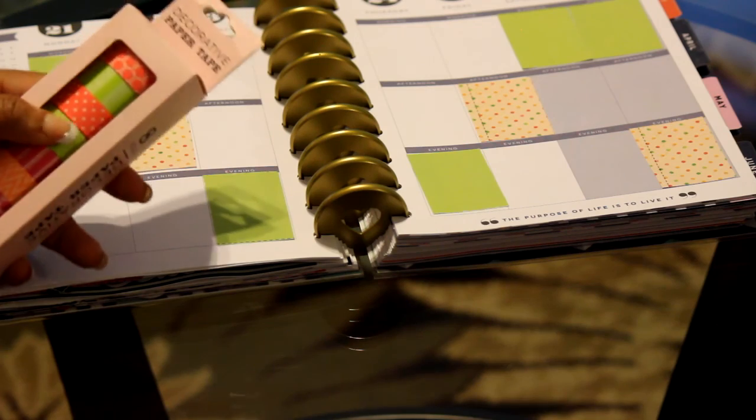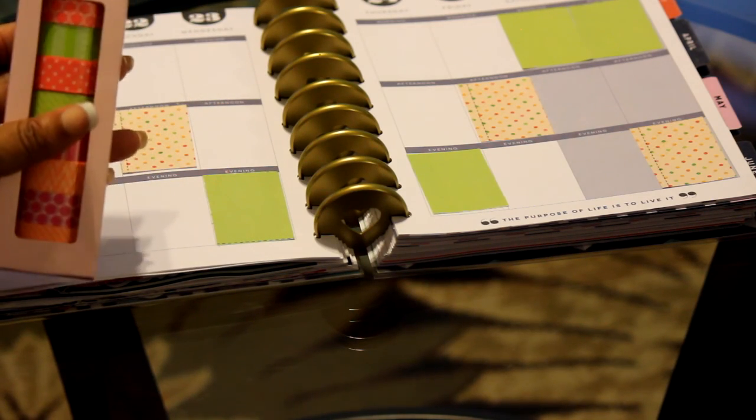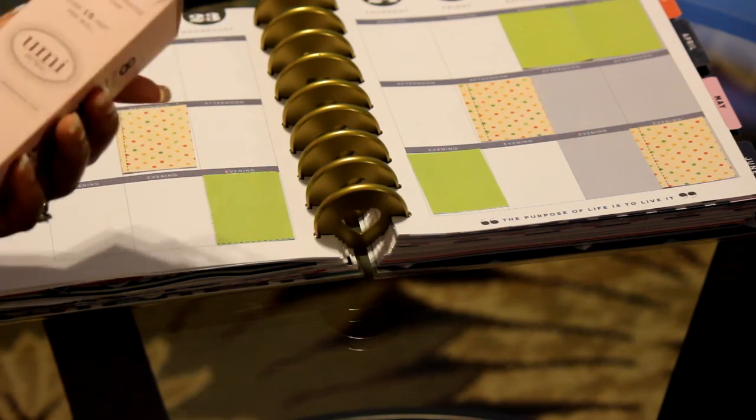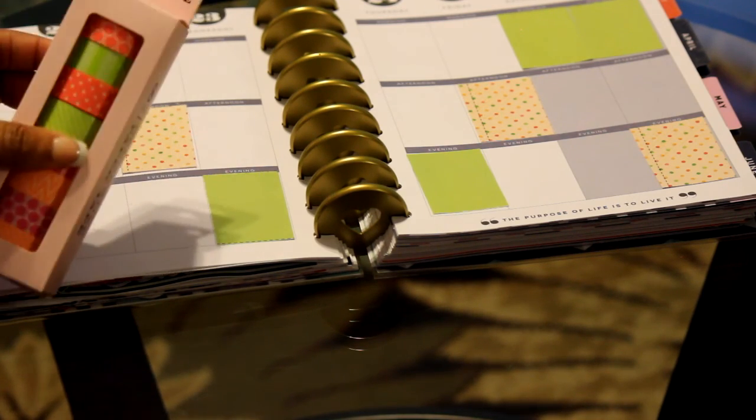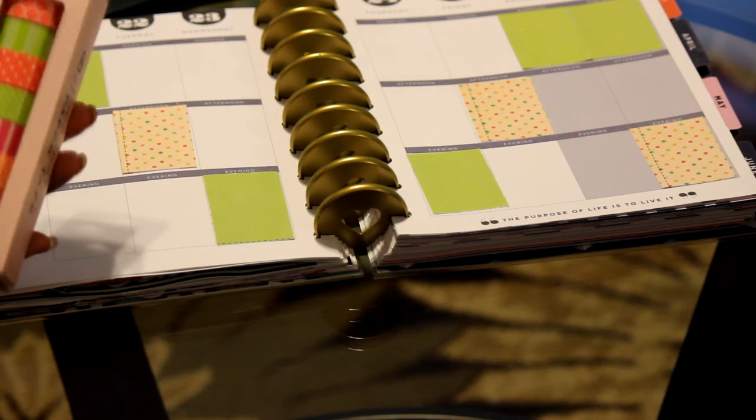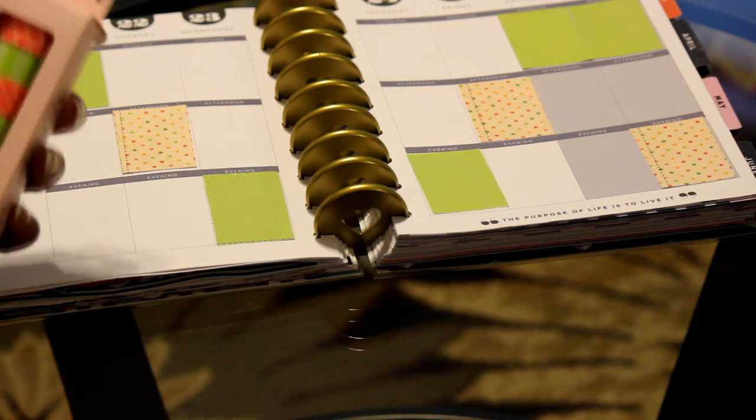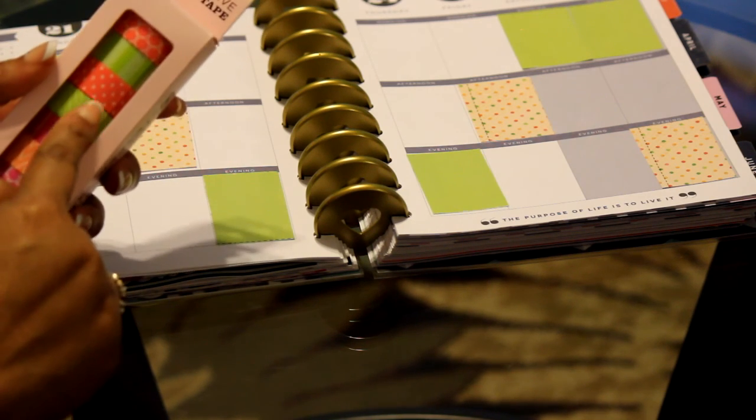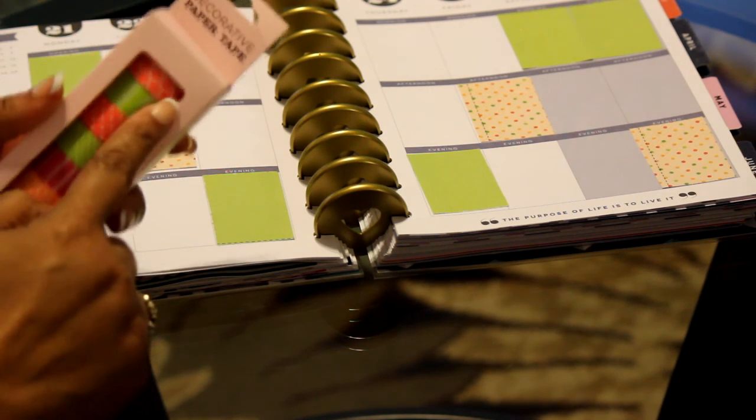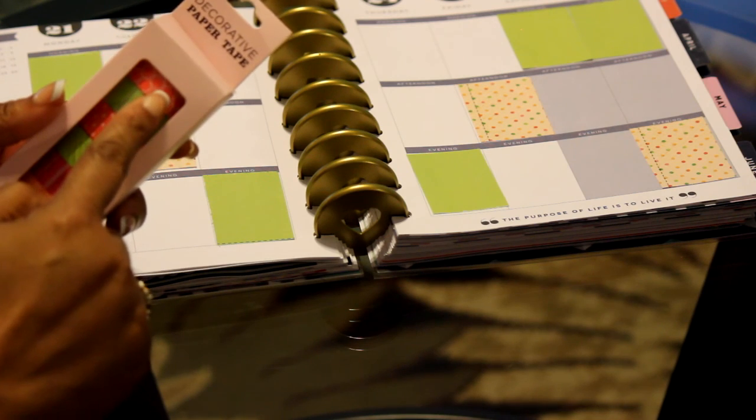Okay guys, now that I have my paper or my blocks glued down, I'm gonna start with my washi tape. I picked up a pack of these, you see it's eight rolls of decorative paper tape. I picked this up from Marshall's for three dollars and ninety-nine cents.